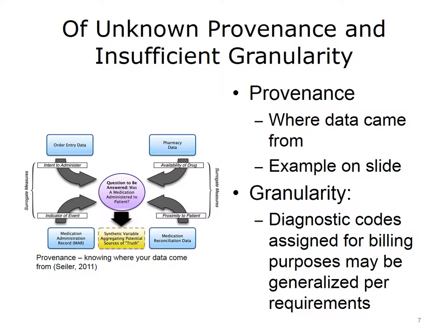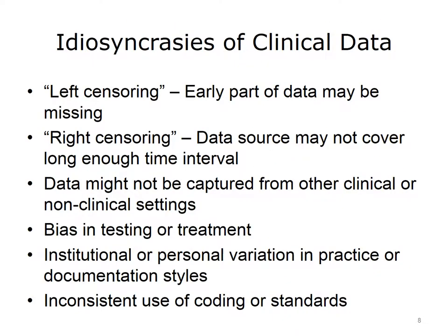In addition to provenance, there's also the problem of granularity. Diagnostic codes assigned for billing purposes may be generalized to a broader diagnostic class. For example, a patient with a set of complex cytogenic and morphologic indicators of a pre-leukemic state may be described as having myelodysplastic syndromes, or MDS, for billing purposes. But this data would be insufficient for other purposes such as research, where a more specific diagnosis would be required.